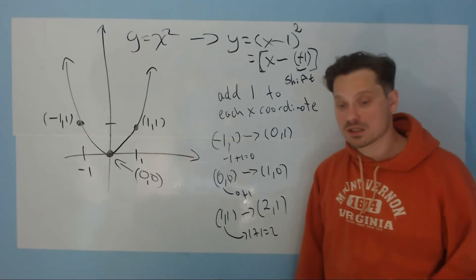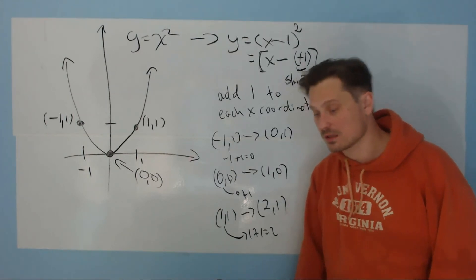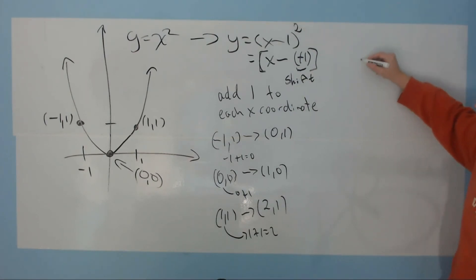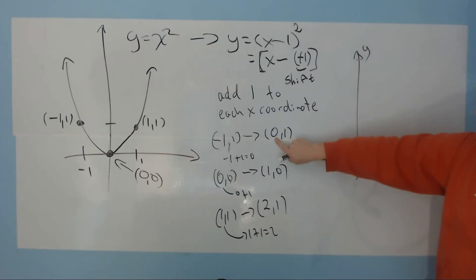Once you have your points correctly transformed, the next stage in the process is to simply then make a new picture of everything. I'll do that on the side. The new picture looks like this. I draw my x and my y as usual. The new point I'm going to mark is 0, 1. So I'll say this is 0, 1.